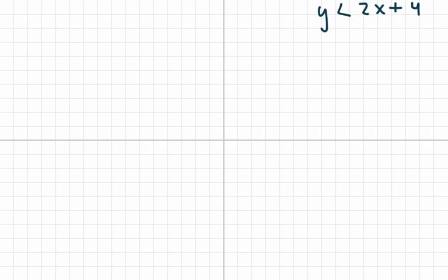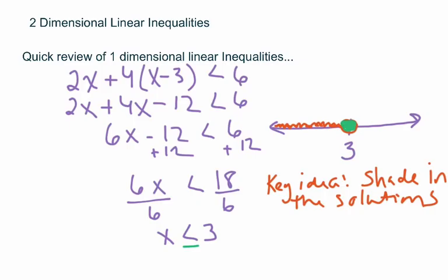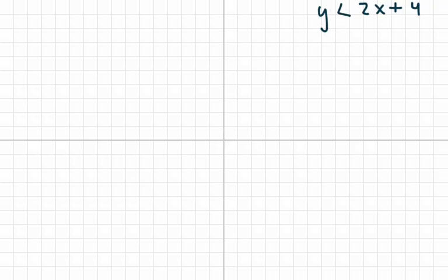What I have here is my coordinate plane. This is an inequality in two dimensions, and I know it's two dimensions because I have the x and the y. When you go to graph something in two dimensions, instead of just being on the number line, now you're on the coordinate plane where you have the x and the y axis — that's your two dimensions.